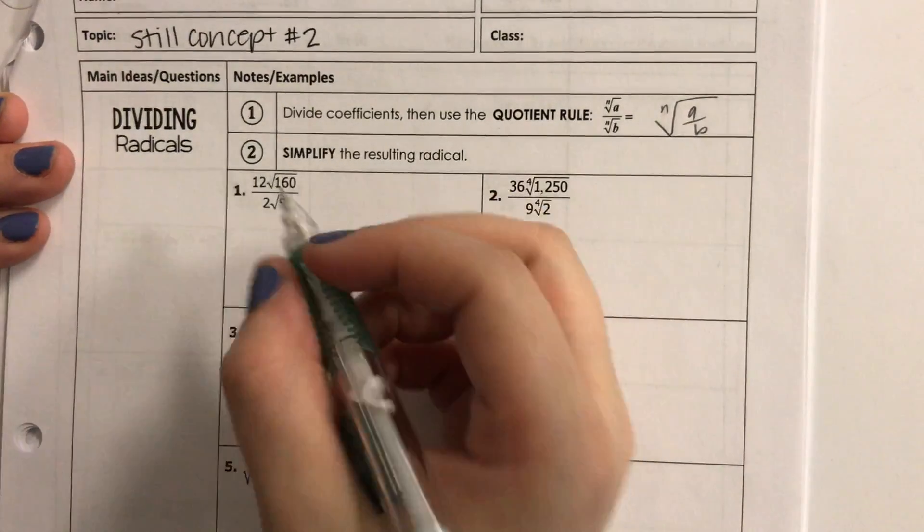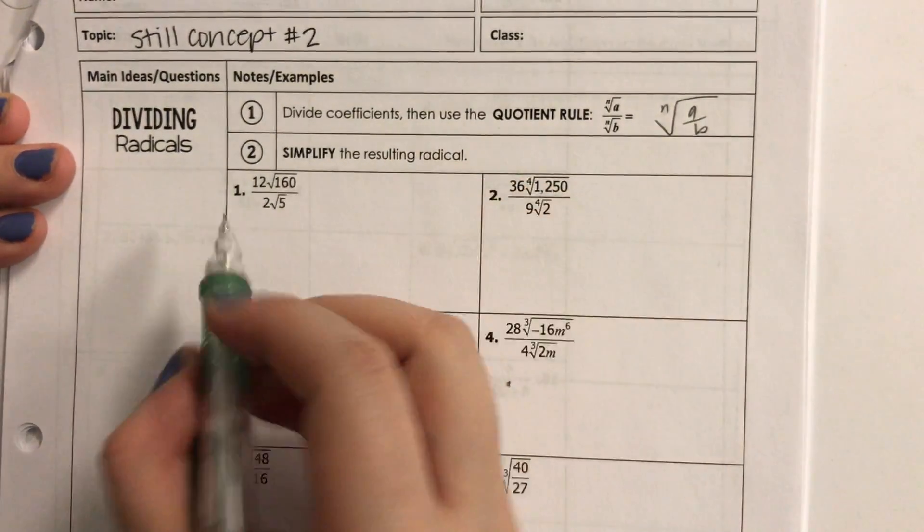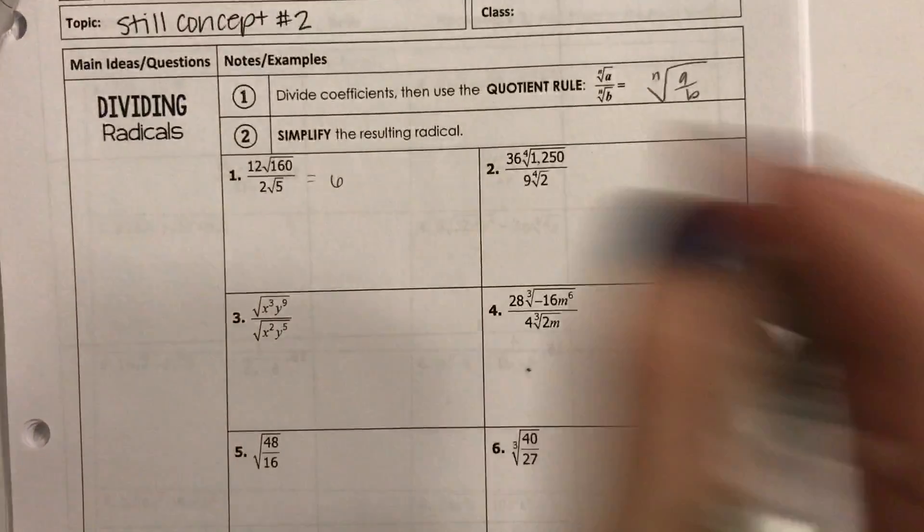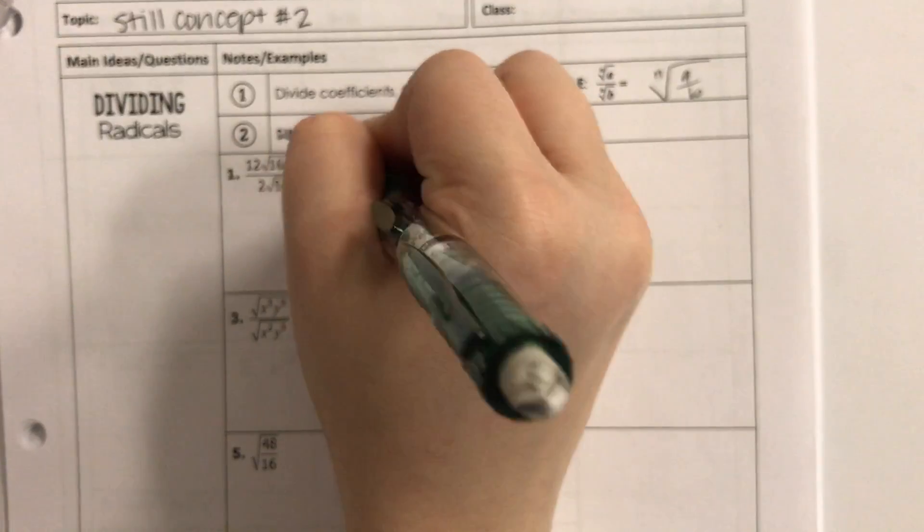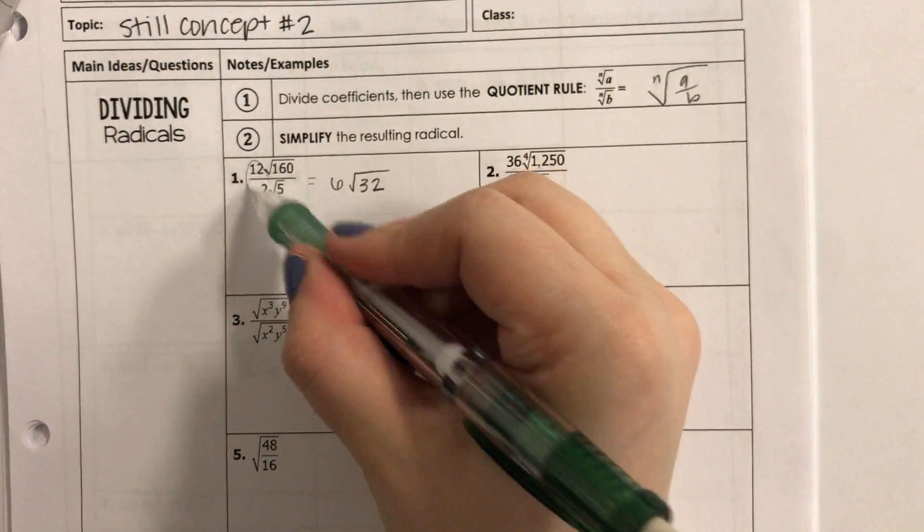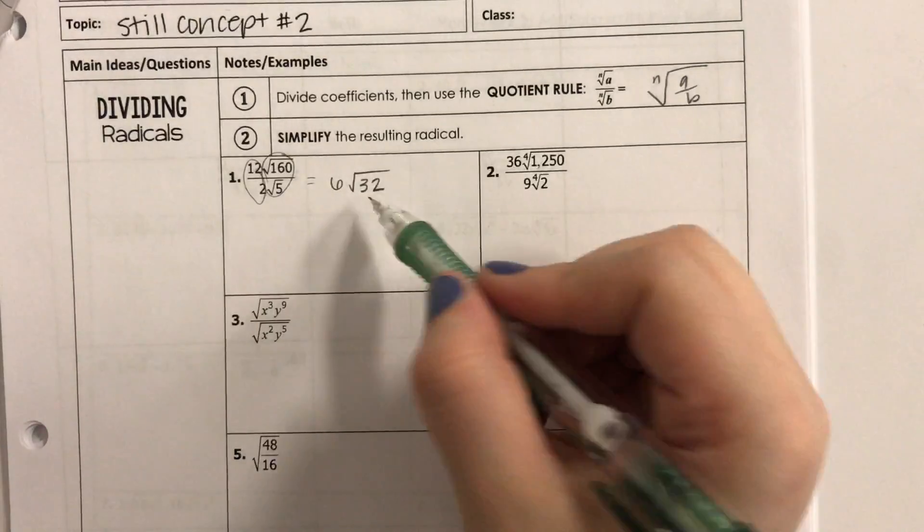So, here we go. 12 divided by 2 is 6. 160 divided by 5 is 32. And now we simplify. So I divided these, and then I divided those to get this.